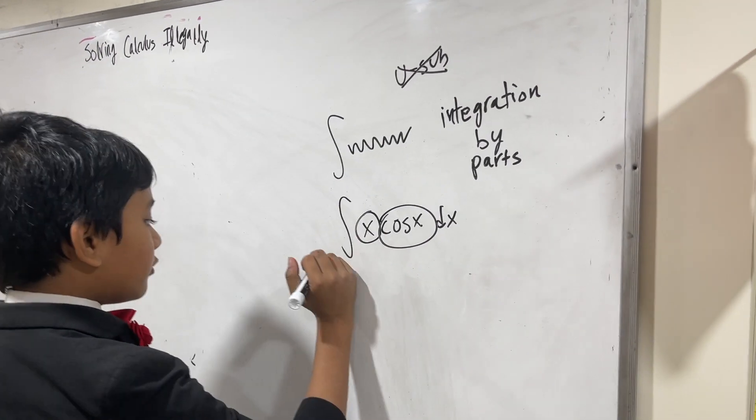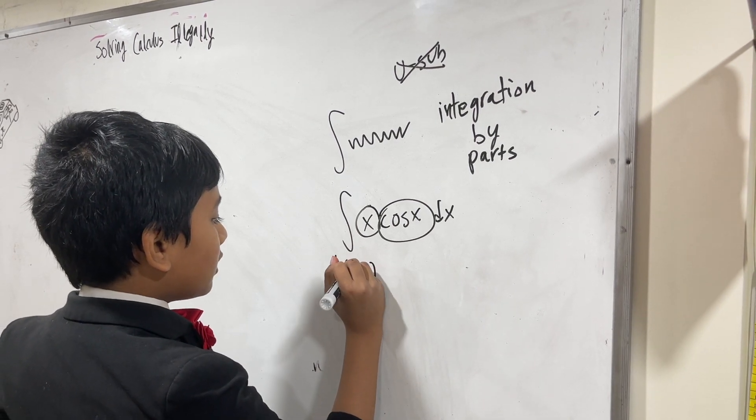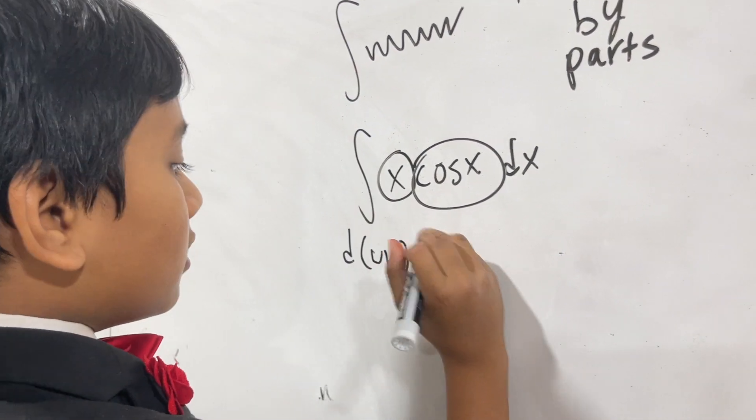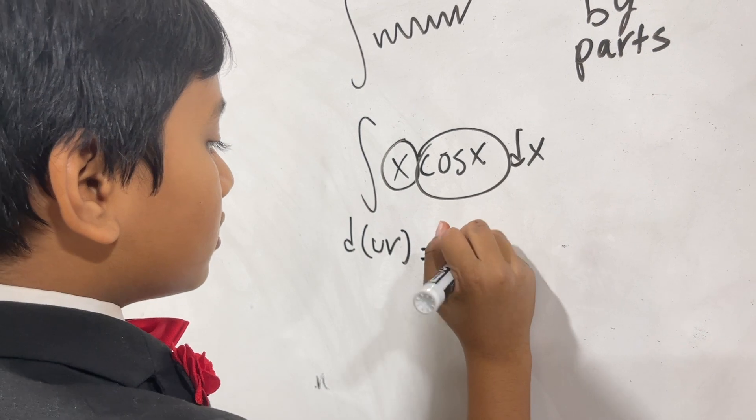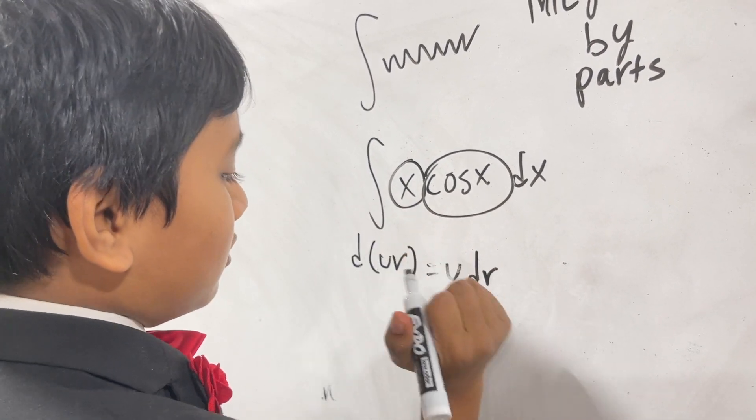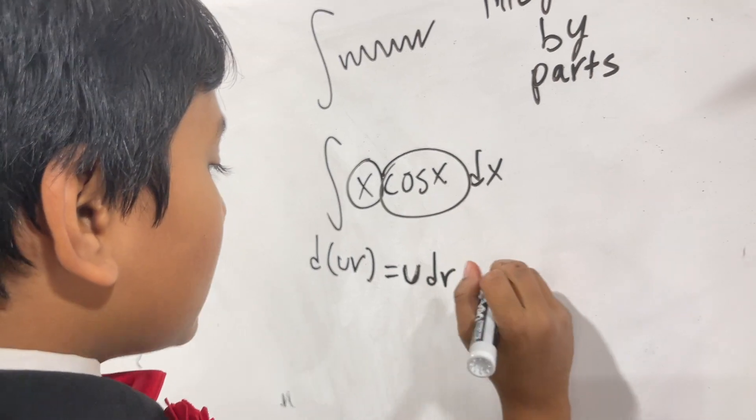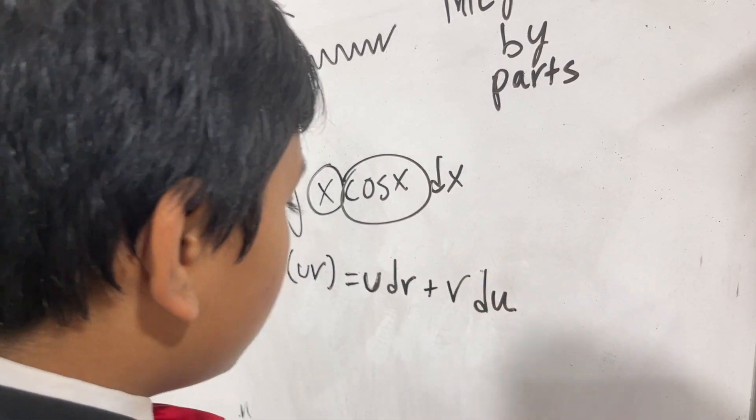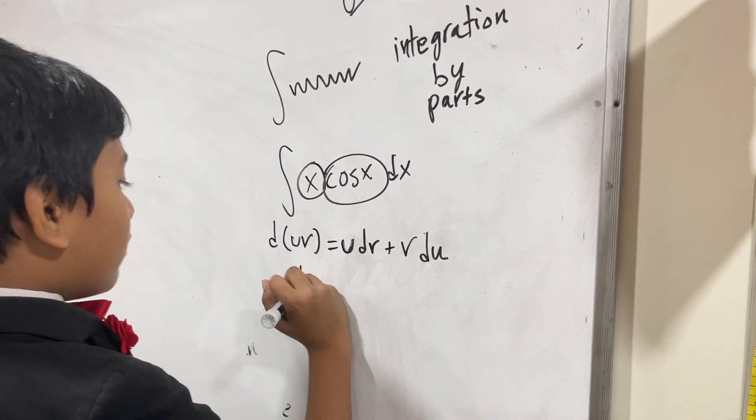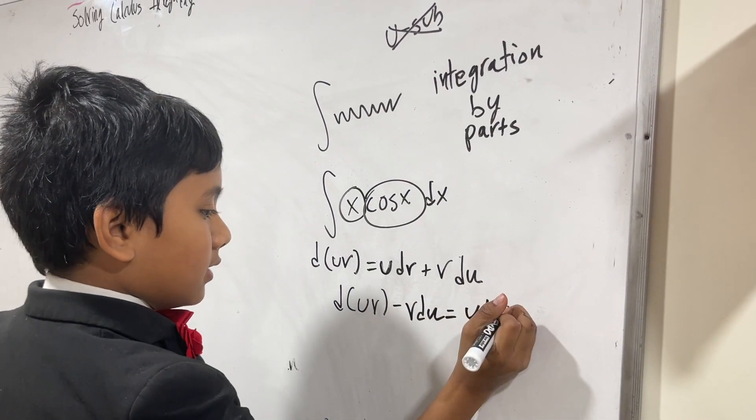This stems from a little formula that says that the derivative of the product of two functions u times v is equal to u dv plus v du. Now we're going to take that v du, put it on the other side. We get u dv.